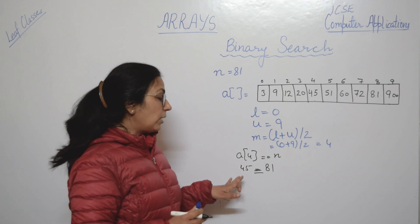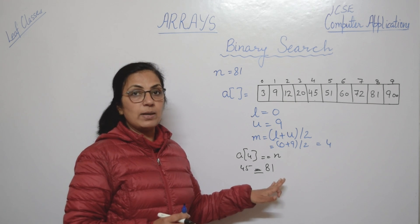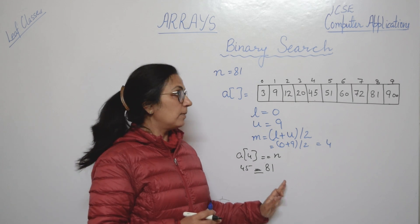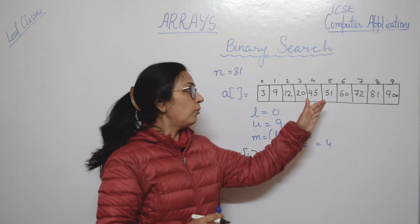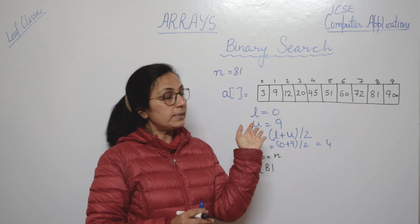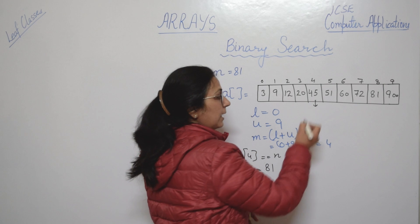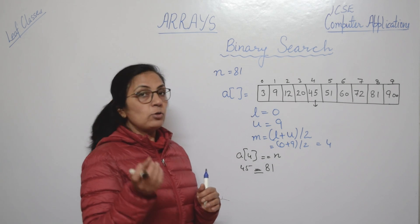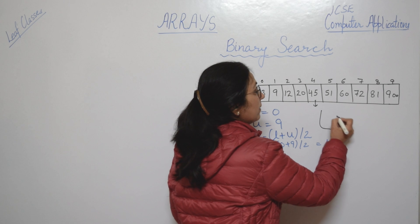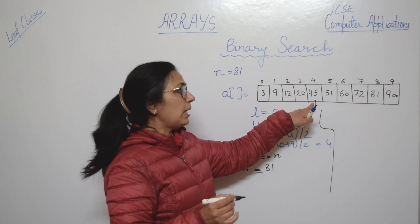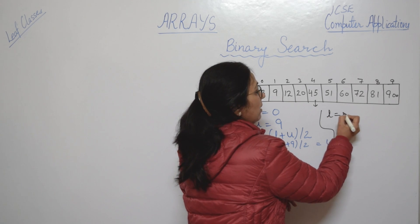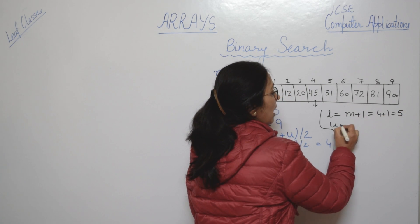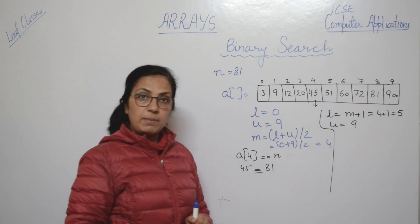A[4] is 45 and the number we want to search is 81. Since 45 is less than 81, and the array is in sorted order, 81 cannot be before position 4. So there's no chance of finding it in the first half. We change the lower limit to mid plus 1, making it 5. Upper limit remains 9.